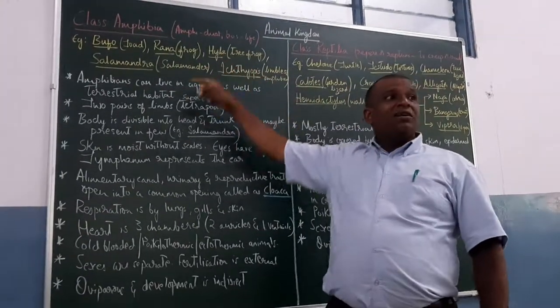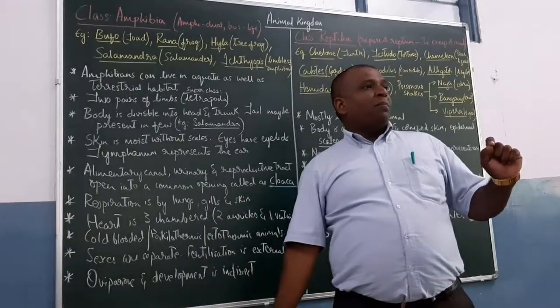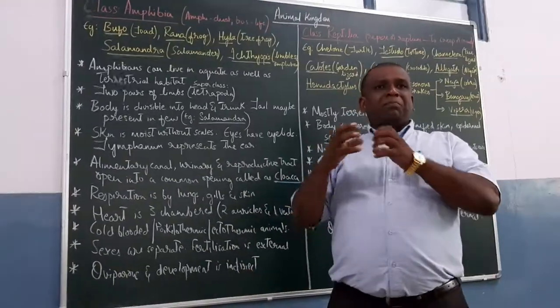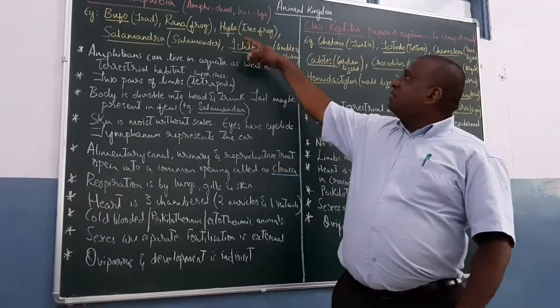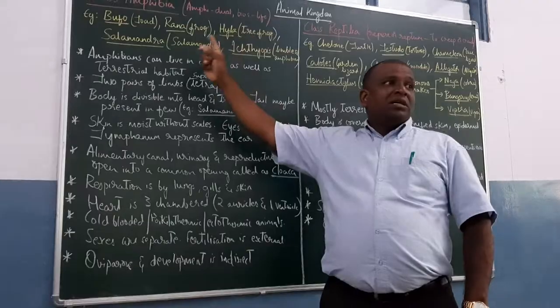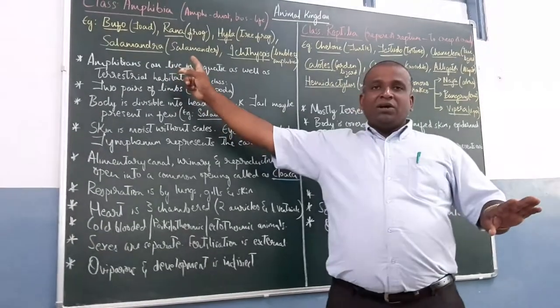Then there is Hila, tree frog. In population interaction survey, I will be showing you that. It is completely greenish in color. Very small ones. Hila, which is also called as tree frog.